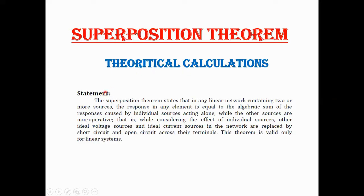The statement of superposition theorem is: it states that in any linear active bilateral network containing two or more sources, the response in any element is equal to the algebraic sum of responses caused by individual sources acting alone. Only one source will be present at a time, while the other sources are non-operative or inactive. While considering the effect of individual sources, other ideal voltage sources and current sources in the network are replaced by short circuit for voltage and open circuit for current.